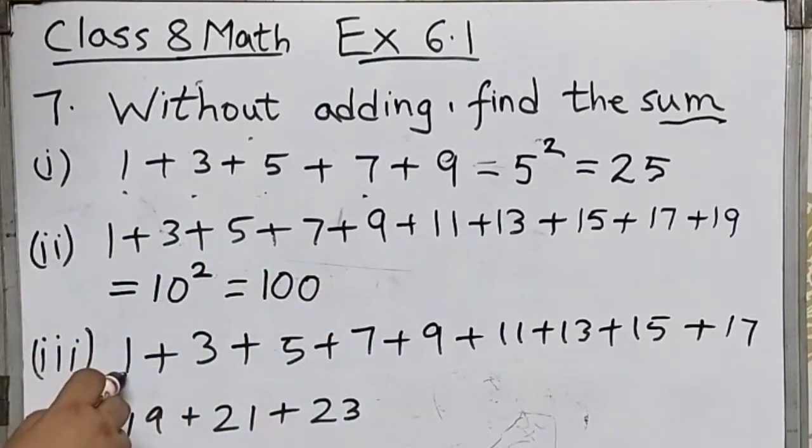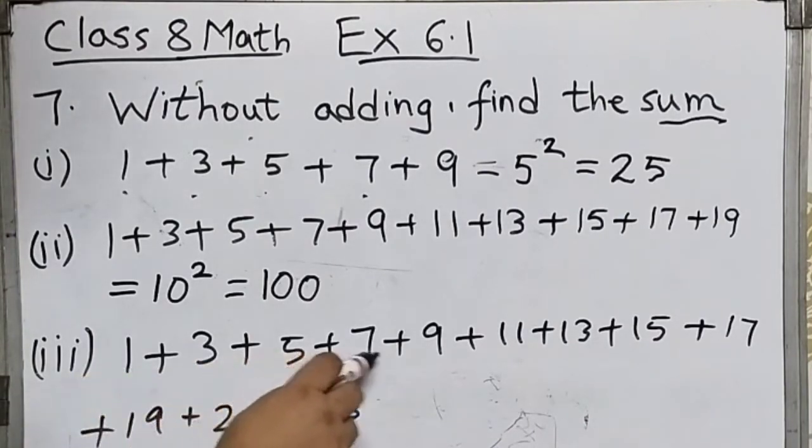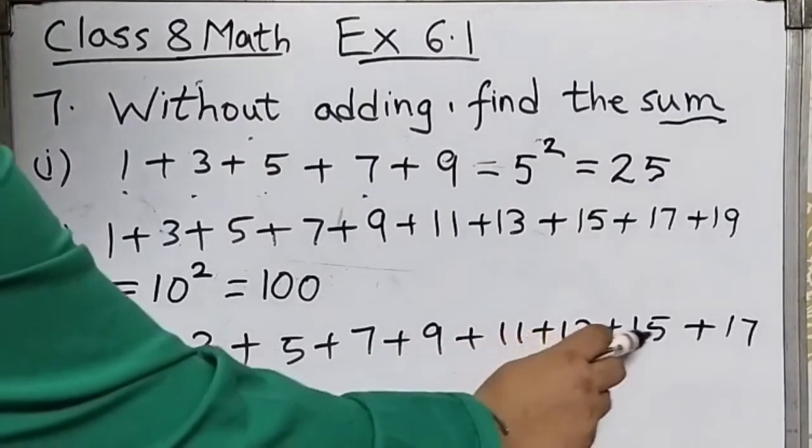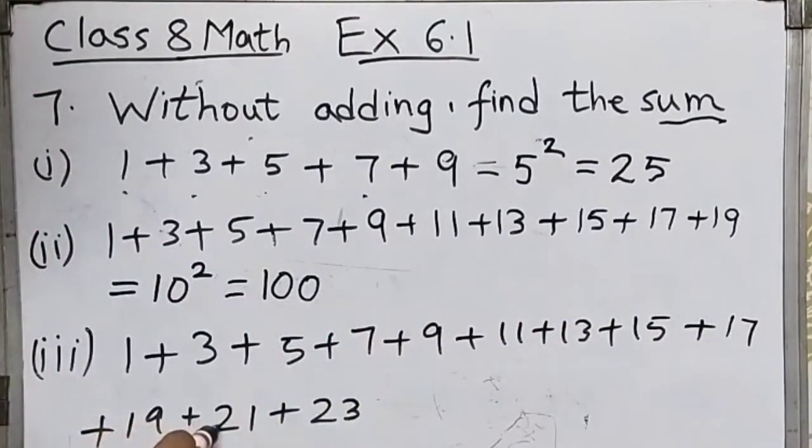The last one, starting with 1, all odd numbers. Count how many odd numbers are there: 1, 2, 3, 4, 5, 6, 7, 8, 9, 10, 11, 12.